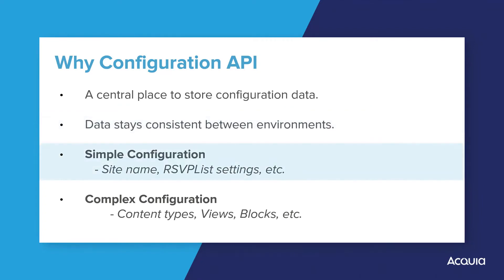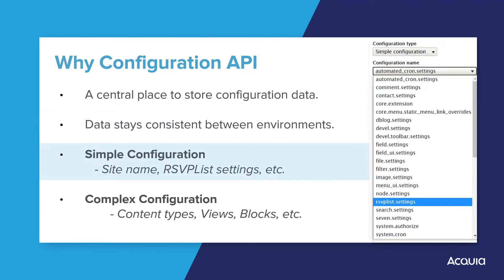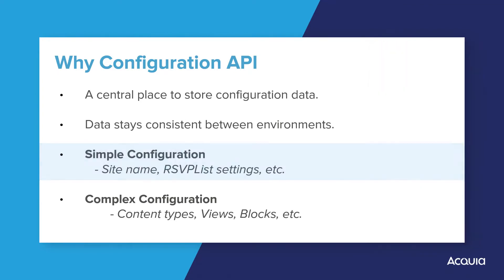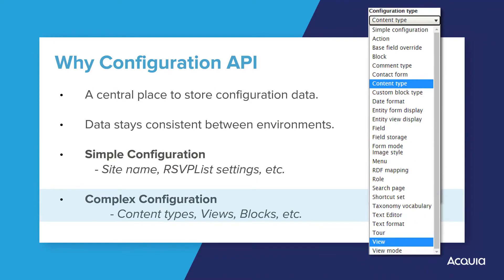Configuration can be simple information, like your automated cron settings or site settings such as site name. Or it can be more complex information, such as the blocks, content types, and views of your site, which are managed with configuration entities.